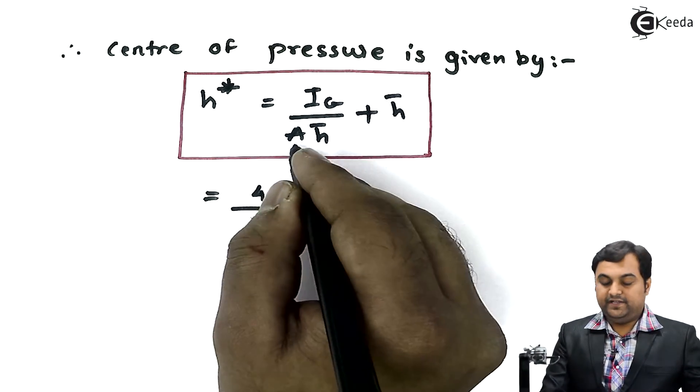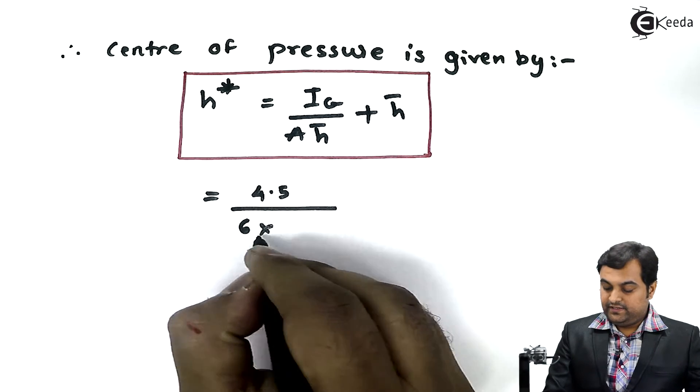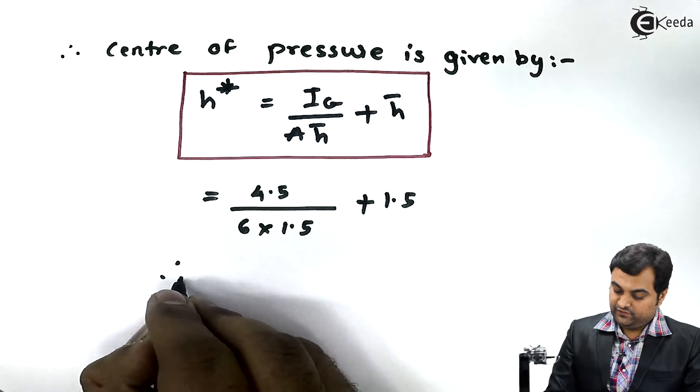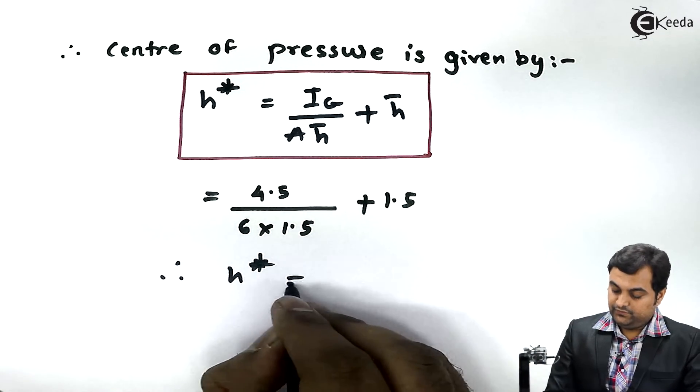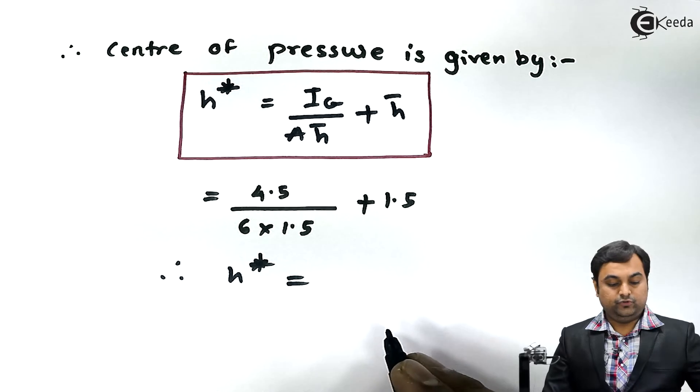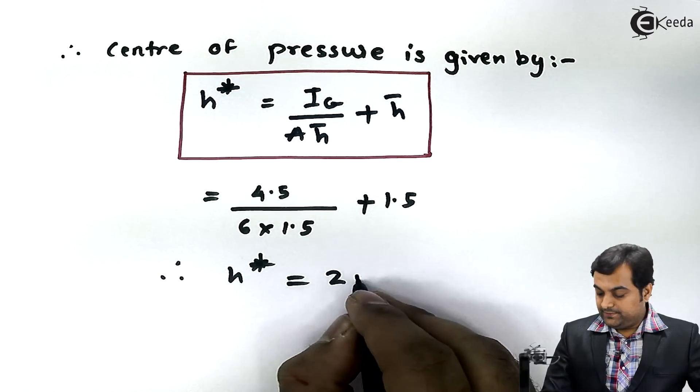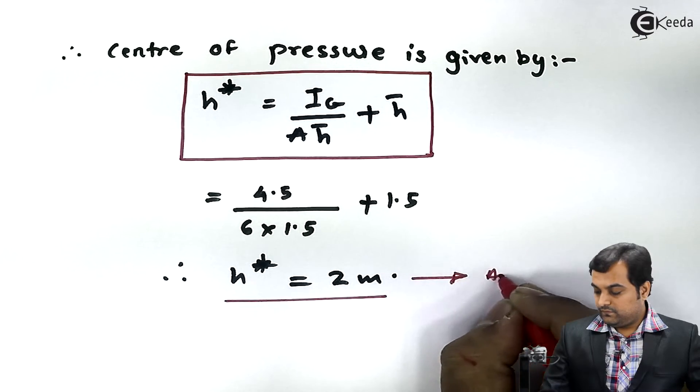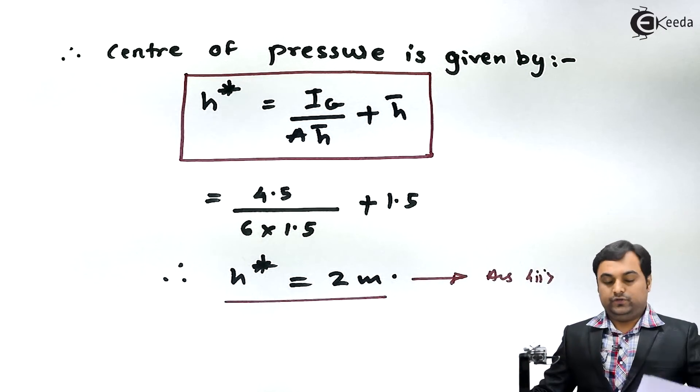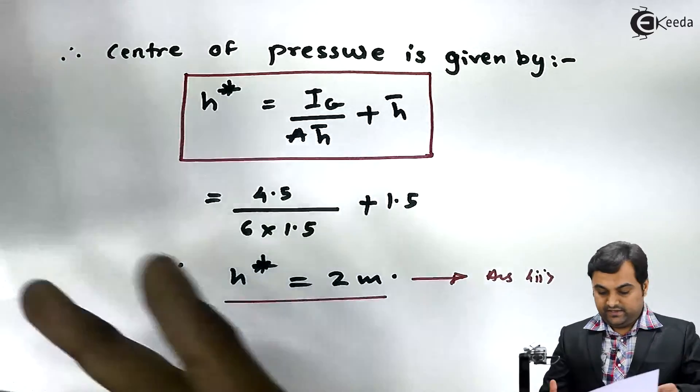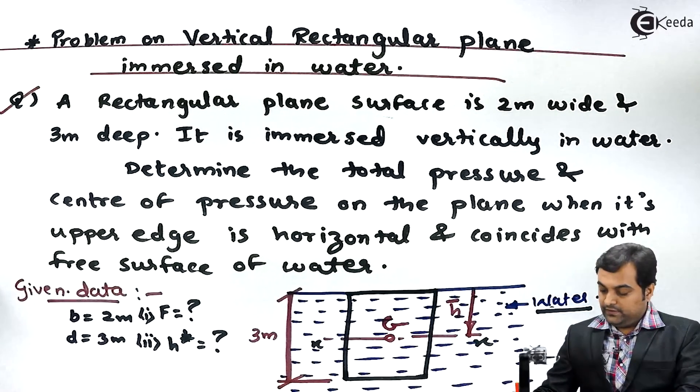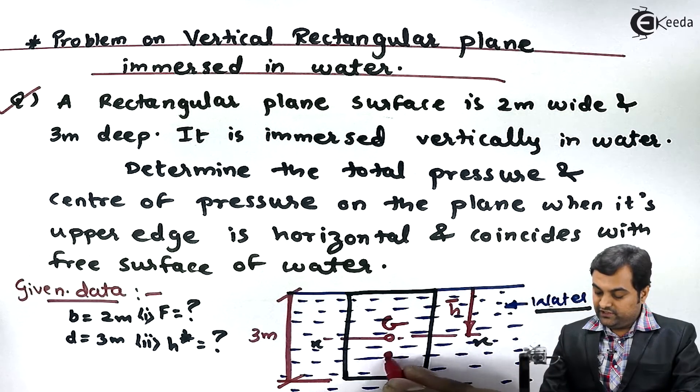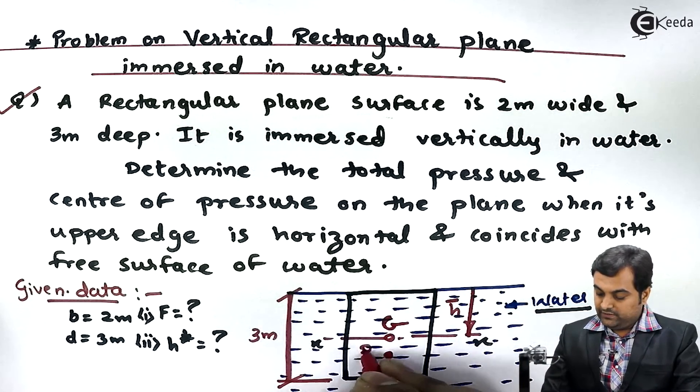Divided by the area, which was 6, times H bar which was 1.5, plus 1.5. Therefore H star value if I calculate comes out to be 2 meter. This is my second answer. So now if I can show it on the diagram, H bar was 1.5, so below this centroid we have another point called point P, the center of pressure.